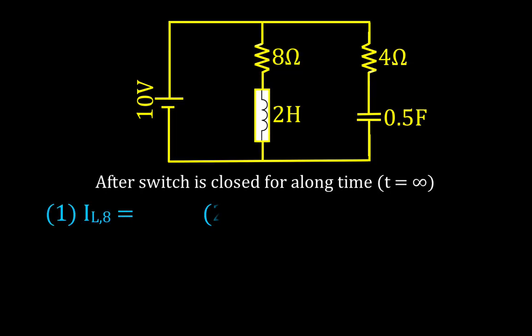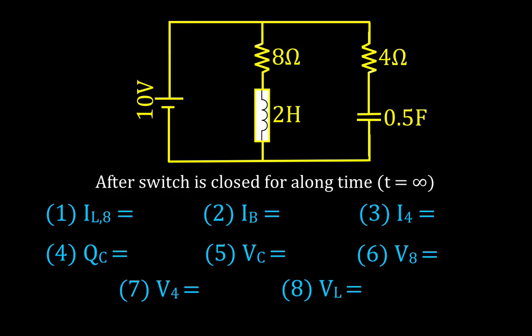Now let's look at all those values for when the switch has been closed for a long time. After a long time, the current through the inductor is no longer changing, so there's no more self-induced voltage — no voltage drop across the inductor. The inductor just acts like a short, a plain wire. This branch is still in parallel with the 10-volt battery, so all 10 volts appear across the 8-ohm resistor.